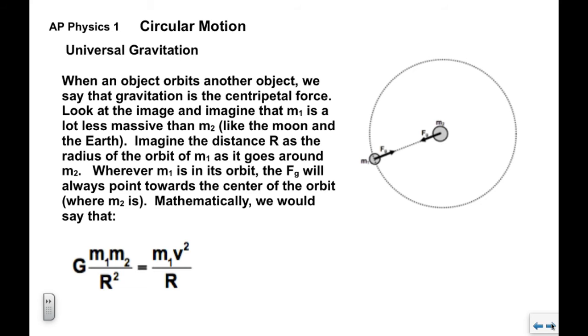Now we're going to take a look at orbits. When an object orbits another object, we say fundamentally that gravitation is the centripetal force. If we look at this image, we look at the two objects. We're going to say that M1 is a lot less massive than M2. This might be the moon and this might be the Earth, and this object is orbiting around M2 in a nice circular path.